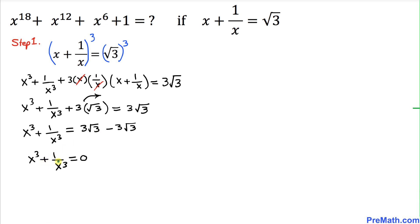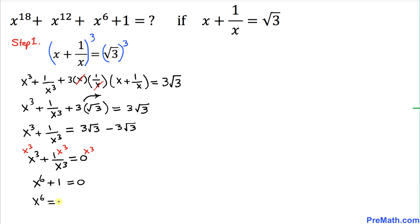In our next step, we remove this fraction. We multiply across the board by x power 3 — on this side, and over here. So x power 3 times x power 3 becomes x power 6, and the other terms cancel, giving us x power 6 plus 1 equal to 0. Thus x power 6 equals negative 1. That is our very first key result.